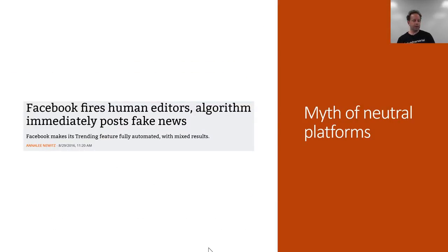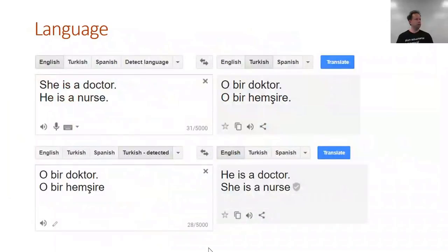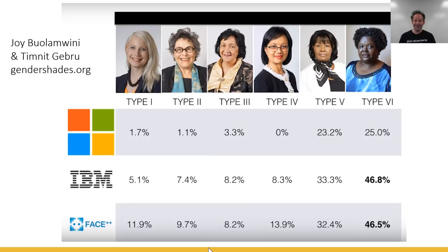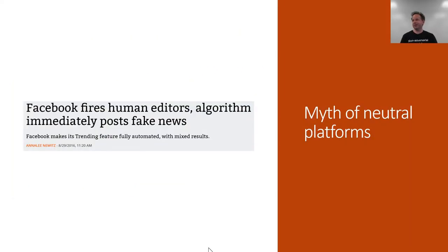This stuff matters. It matters in ways more than just awkward translations or black people's photos not being classified correctly. There's a long history of civilization and societies creating layers of human judgment which avoid the most horrible things happening. And sometimes companies which love technology think, let's throw away the humans and replace them with technology — like Facebook did. A couple of years ago, Facebook literally got rid of their human editors, and they were replaced with algorithms.